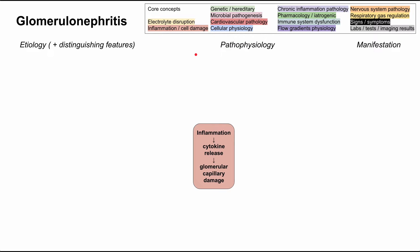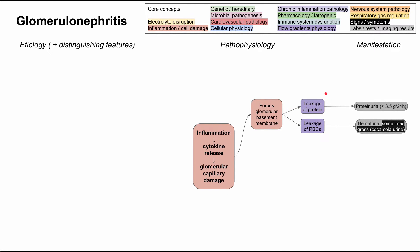The pathophysiology of glomerulonephritis starts with inflammation in the kidney, which causes cytokine release and results in glomerular capillary damage. This makes the glomerular basement membrane porous, leading to leakage of protein and red blood cells. This produces proteinuria — if it exceeds 3.5 grams per 24 hours, that qualifies as nephrotic syndrome, though both nephrotic and nephritic syndrome can coexist.